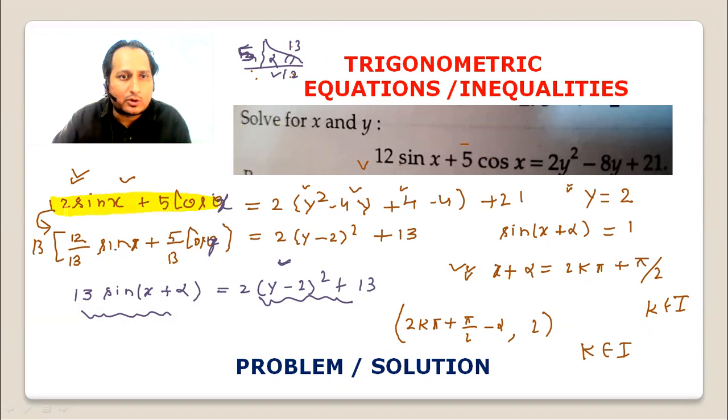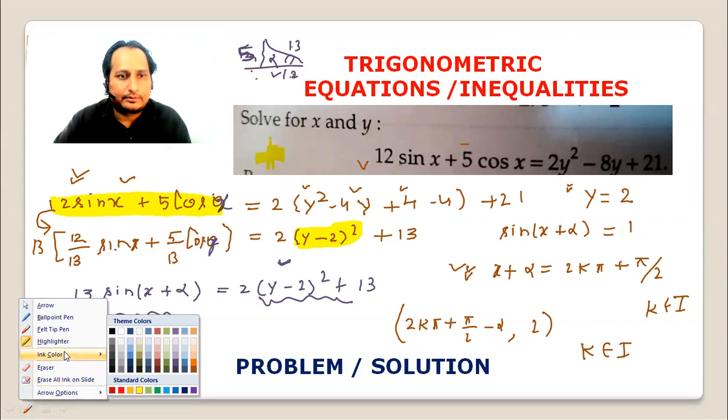This is about the perfect square theory that the minimum value on one side equals the minimum value on the other side. This is a great problem.